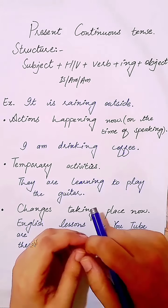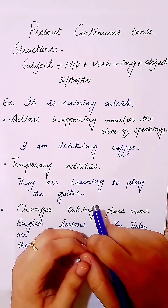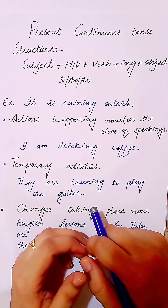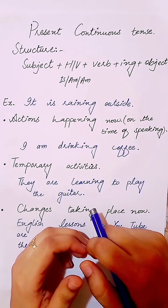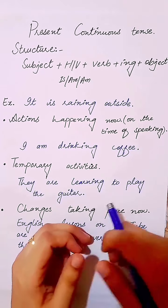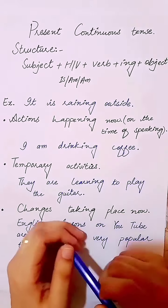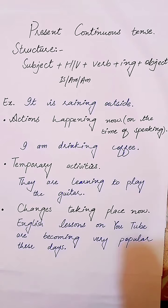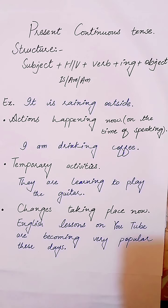The example is 'I am drinking coffee.' This sentence shows action at the time of speaking. This is not a general statement — it's not about a coffee-drinking habit, it's about what is happening at that moment. The second use is temporary activities, like 'They are learning to play the guitar,' meaning they are taking guitar lessons maybe twice or thrice a week — they are in the process of learning the instrument.